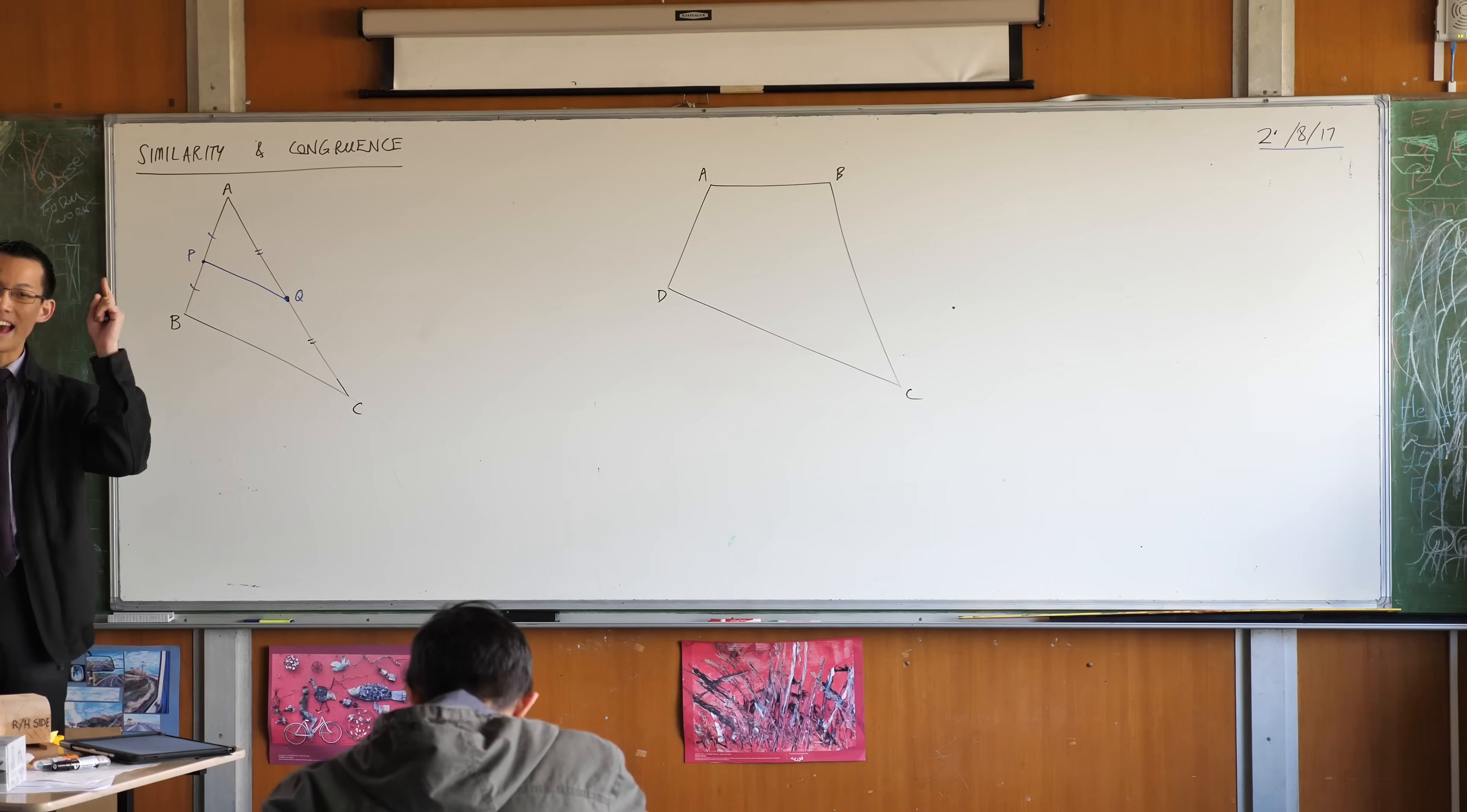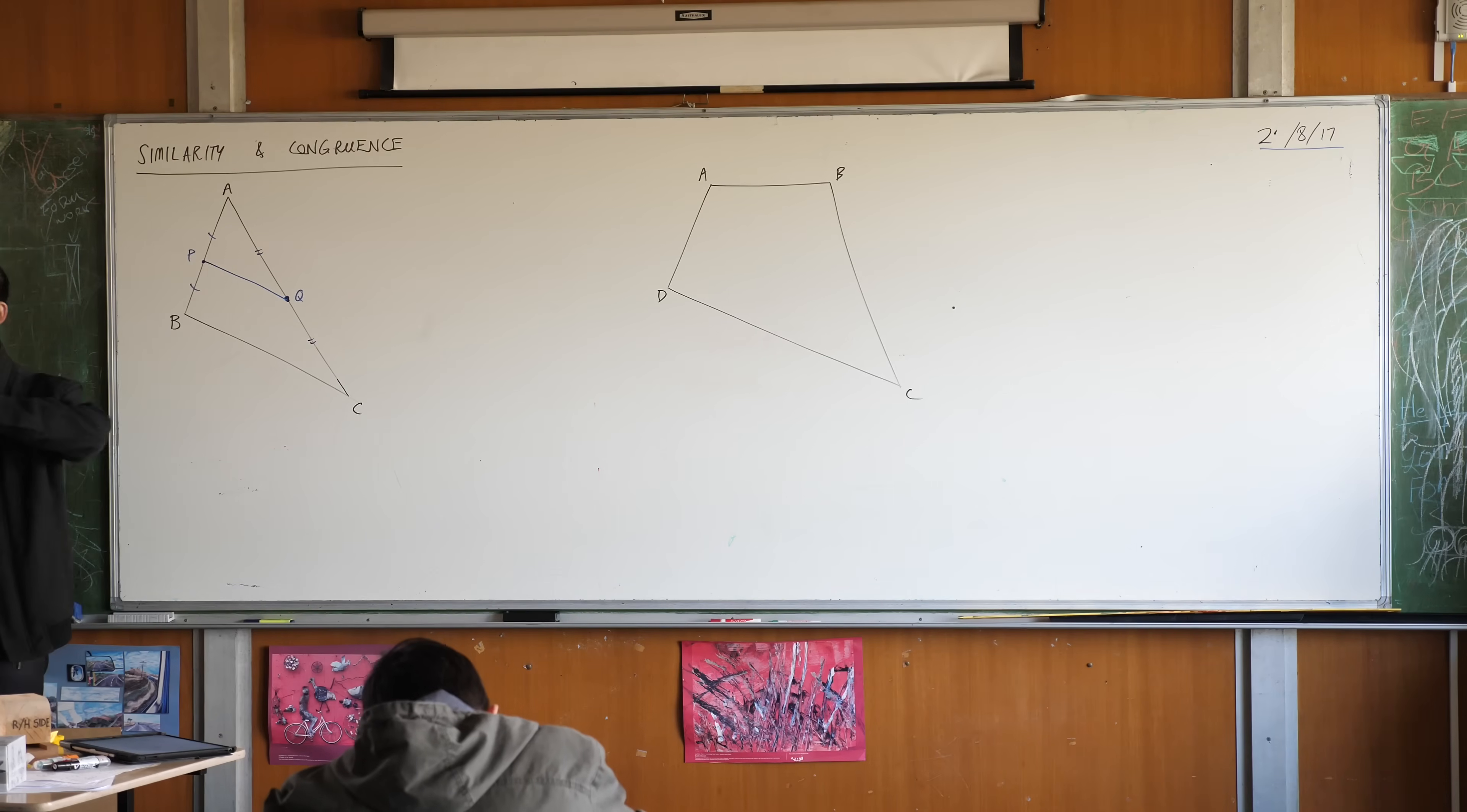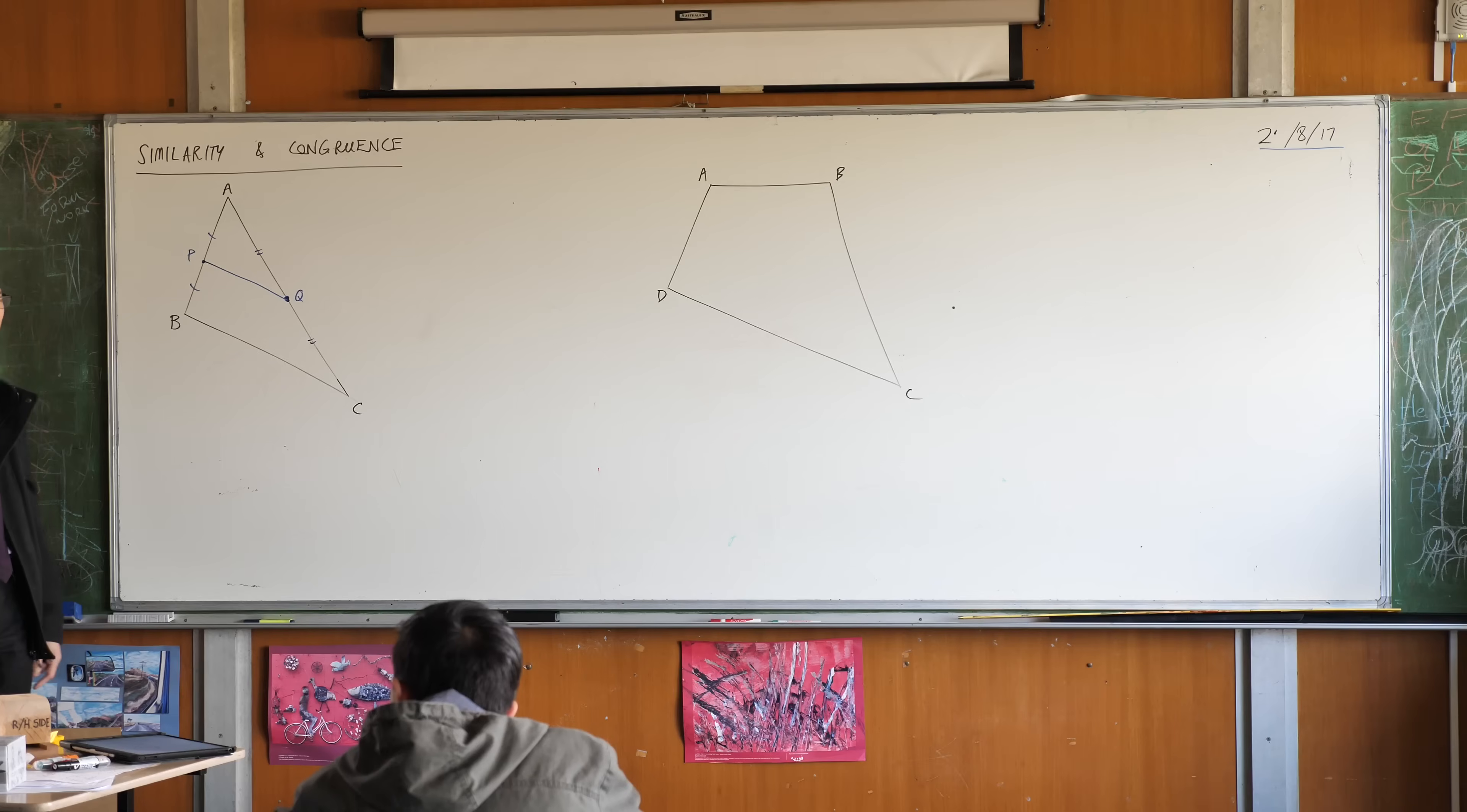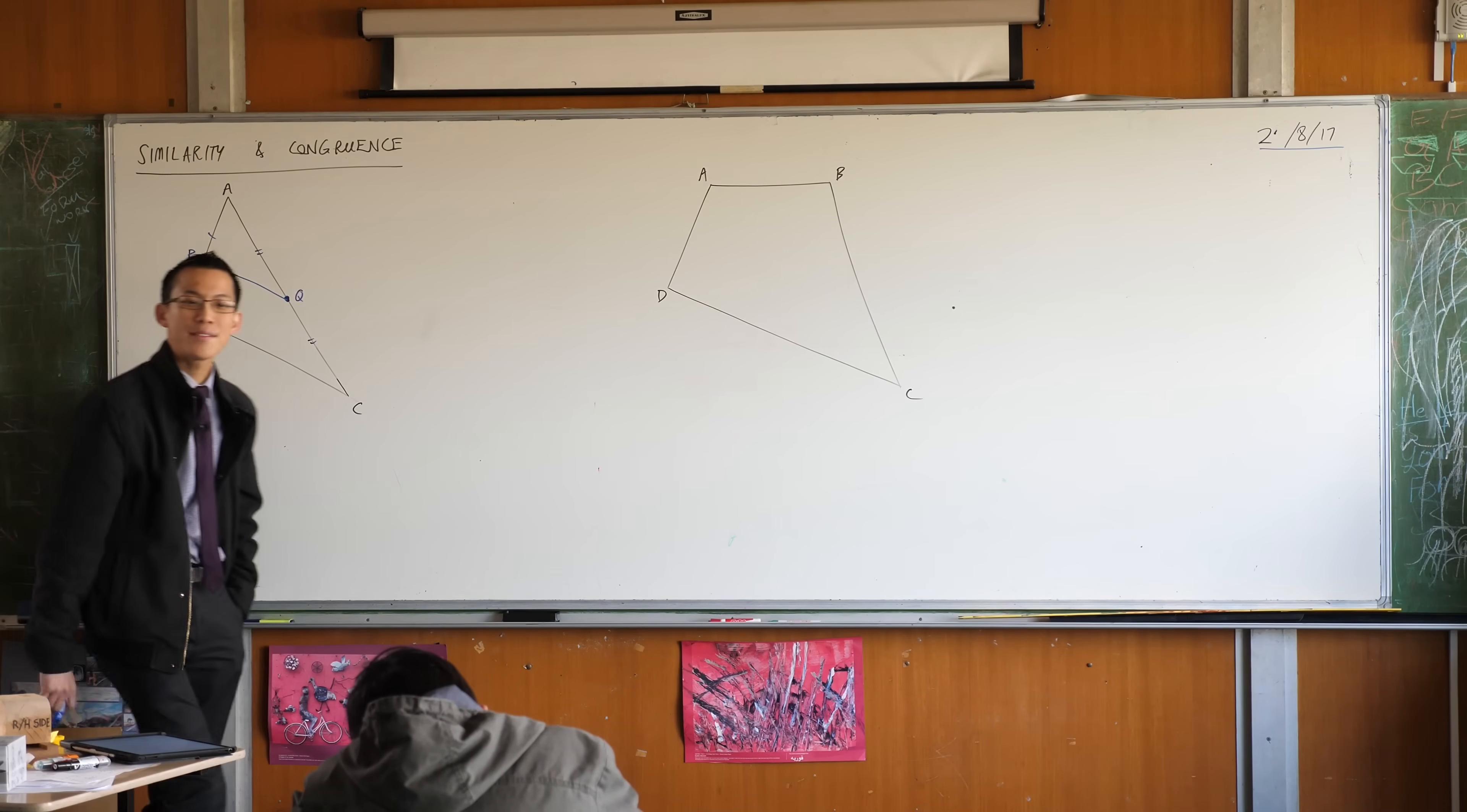This is an interval not a line. An interval begins and it ends. A line goes forever in both directions. Does anyone know what it's called when it's like half-half? When it starts somewhere and then it just goes forever? It starts with an R. It's a very uncommon word. We call it a ray. Rays aren't used very much, so that's why you don't hear about them very often. Okay, now have a look at PQ.